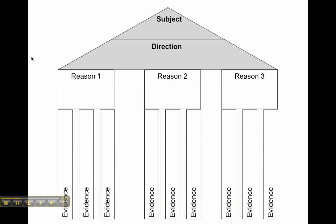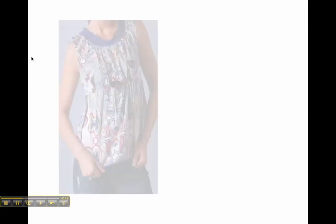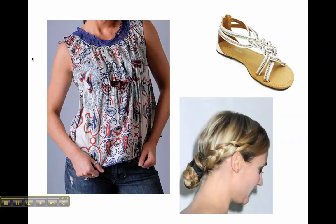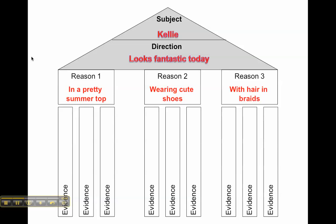In class today, I called out a particular student in each group, identifying them as looking particularly fantastic that day. I mentioned things like the top the student was wearing, the shoes, or the hairdo, and we used this as an example of how we would organize our thoughts about a topic into an essay. The subject of our pretend essay was the student I was calling out — we'll just call her Kelly. The direction, or what we're saying about Kelly, is that she looks fantastic, and the reasons are the shirt, the shoes, and the hair.